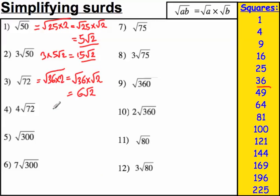Let's try to do the next one a bit quicker. 4 root 72. Well, if 1 lot of root 72 is 6 root 2, 4 times that must be 4 times 6 root 2, which is 24 root 2.